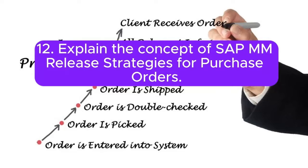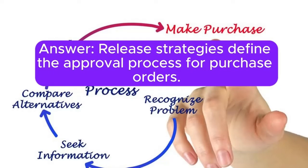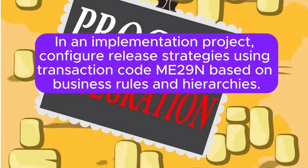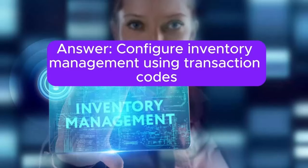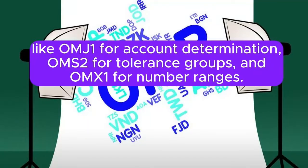Question 12: Explain the concept of SAP MM release strategies for purchase orders. Answer: Release strategies define the approval process for purchase orders. In an implementation project, configure release strategies using transaction code ME29N, based on business rules and hierarchies. Question 13: How do you set up SAP MM inventory management during implementation? Answer: Configure inventory management using transaction codes like OMJ1 for account determination, OMIS2 for tolerance groups, and OMX1 for number ranges.